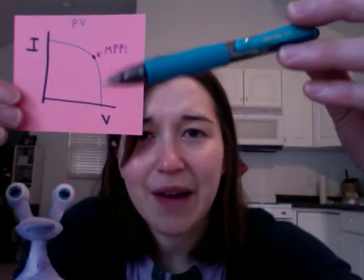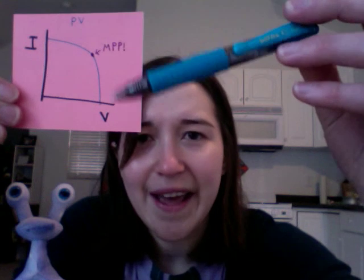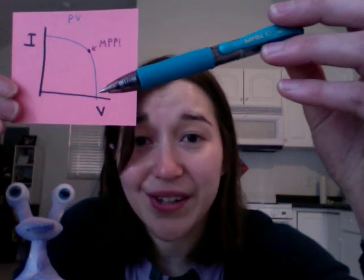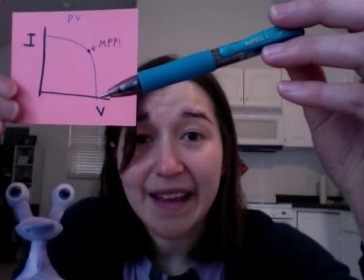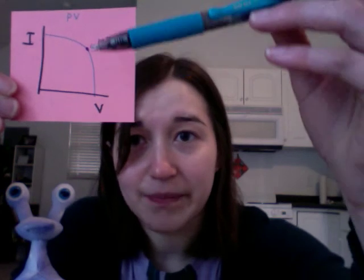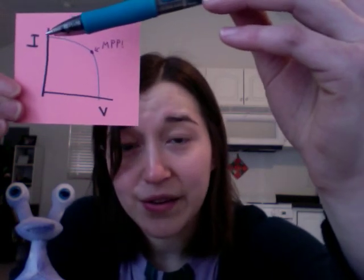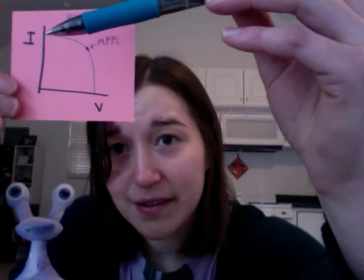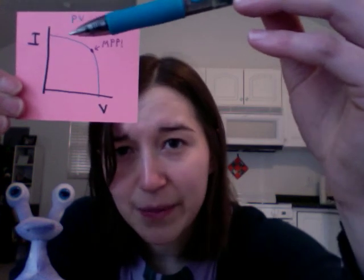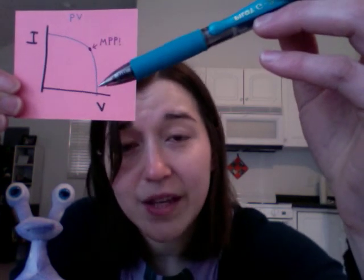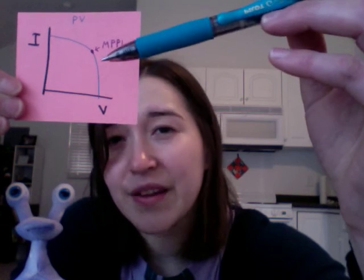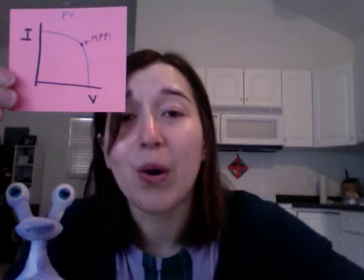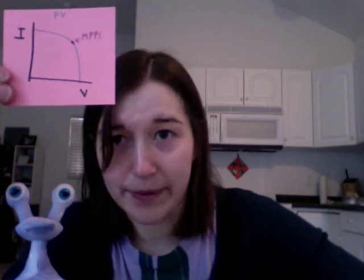The curve is bounded — it doesn't go on infinitely. Remember our power equation: here the current is zero, and that means there's no power being generated. On the other side, there's no voltage — this is zero voltage but high current — but there's no power because of zero voltage. Every point in between is providing power, and there's one point called the maximum power point that provides the most amount of power. That's where you want to operate.